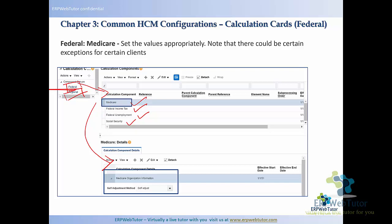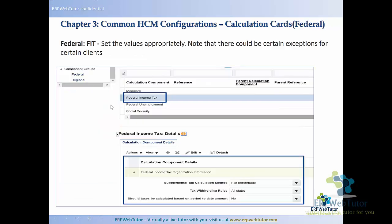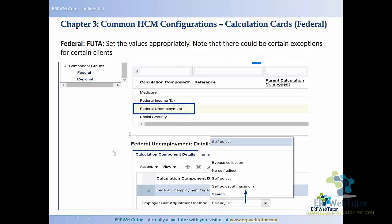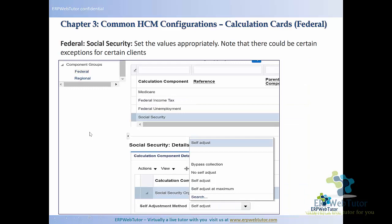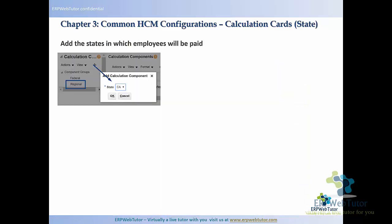Each of these components will have details in the bottom section. When you add federal, all of these components get added, and then you have to go into each component and set the details. These are the different calculation details for federal income tax, federal unemployment, and Social Security — we're going to see what the different options are in the application.